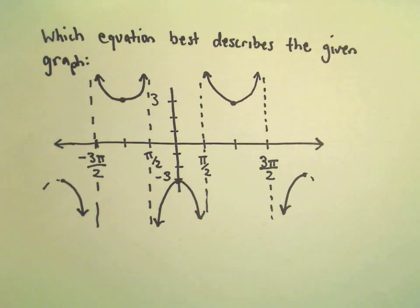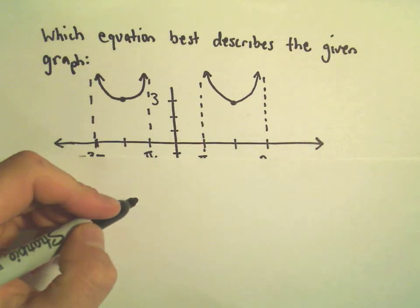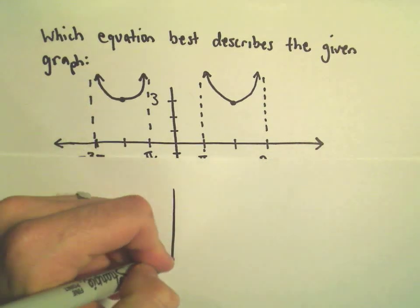So we're trying to think of tangent, cotangent, secant, cosecant, sine, cosine. What does this graph look like? Well, to me it's definitely not a sine or cosine graph. It definitely looks most like a secant or cosecant graph to me.